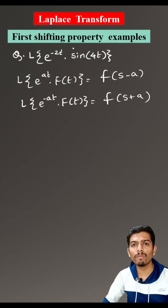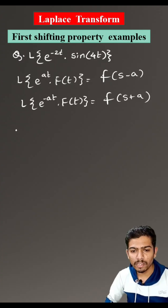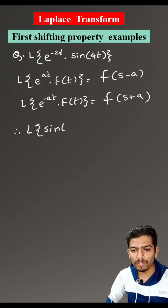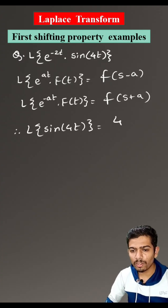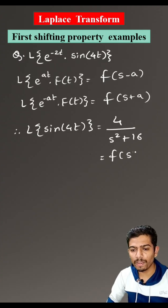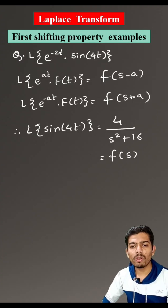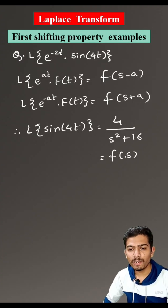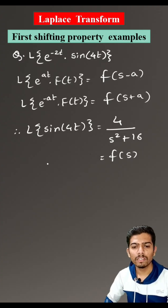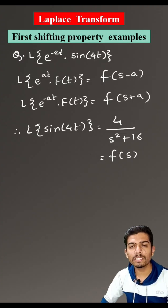Now, what we have to do is find out the value of f(s). Therefore, the Laplace transform of sin(4t) is equals to 4 divided by s squared plus 16, which equals f(s). Now, we have to put the value of s plus a into f(s). So, what is a here? It is 2.